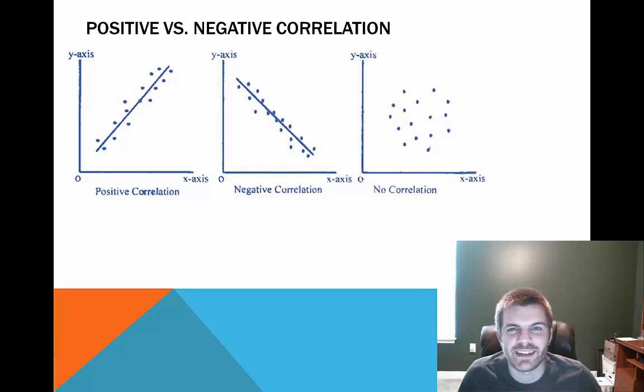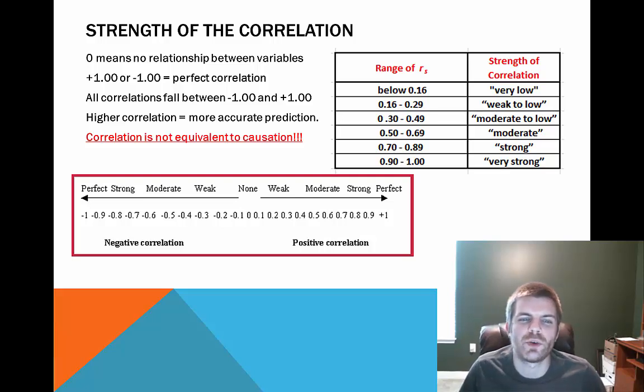It's very important to abandon the idea of thinking that something is going to be good or something is going to be bad when you consider the positive or negative. That's not necessarily going to be the case. In terms of the strength of the correlations, basically your numbers are going to fall between a plus one and a minus one. All correlations fall between this. The higher the correlation, the more accurate the prediction.